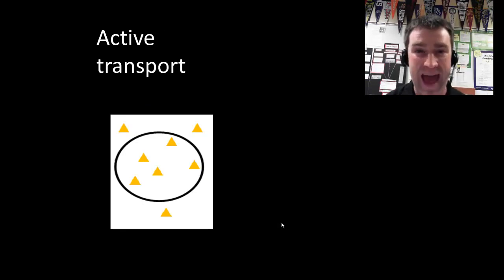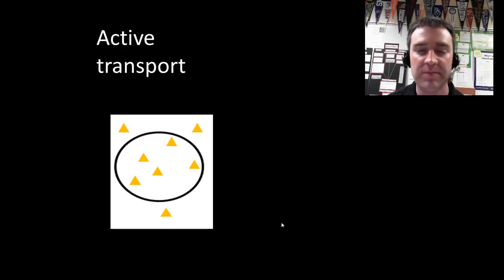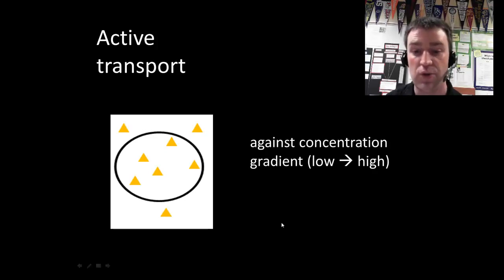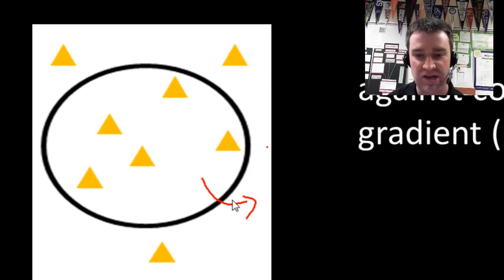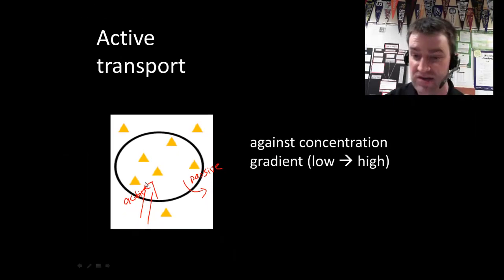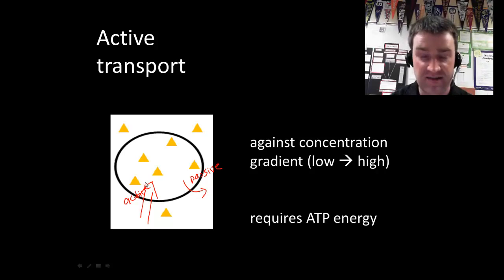Everything just discussed were examples of passive transport. Sometimes cells don't want particles to cross in their natural direction — they want to force them to stay in certain locations and keep concentrations imbalanced. This requires active transport, where a cell's proteins use energy to force particles from low to high concentration — moving them against the concentration gradient. This does require ATP energy and is part of a cell's natural energy expense.